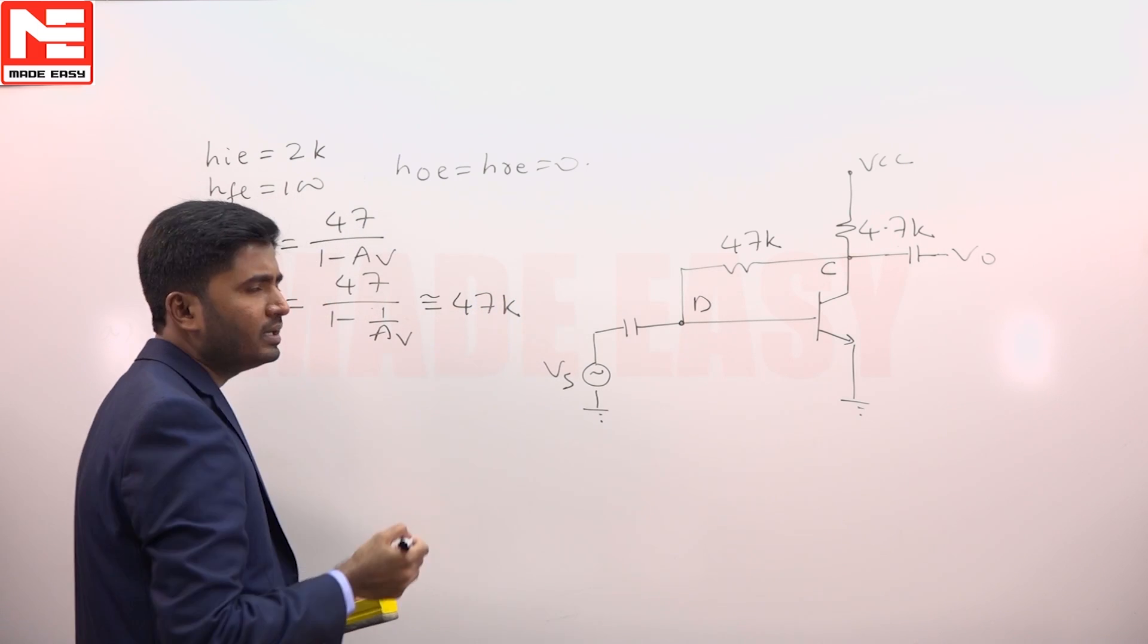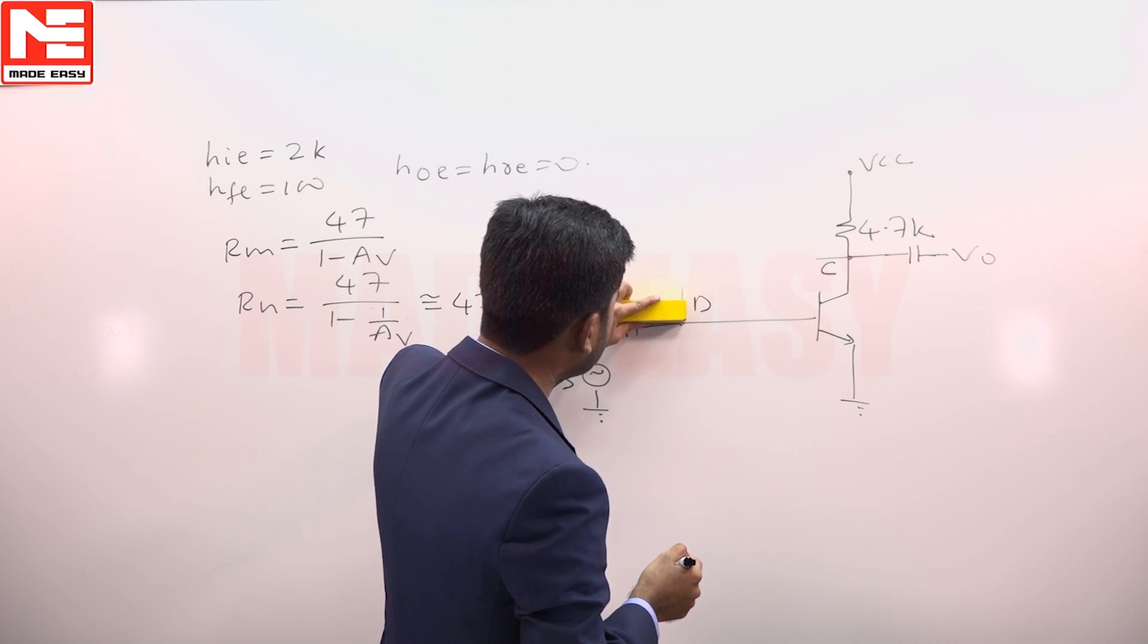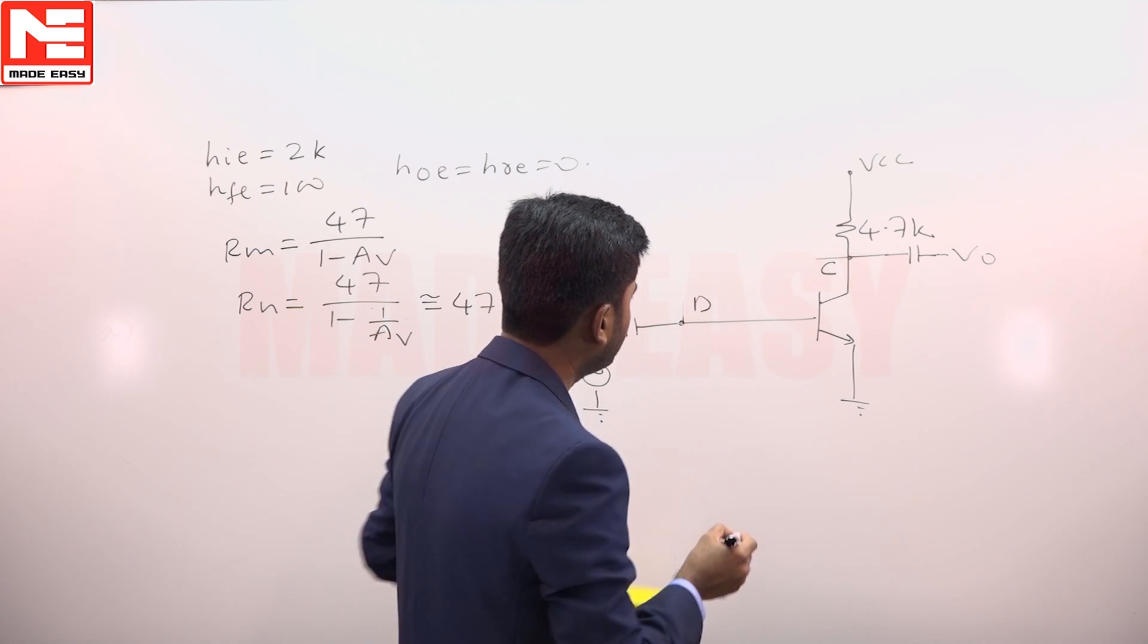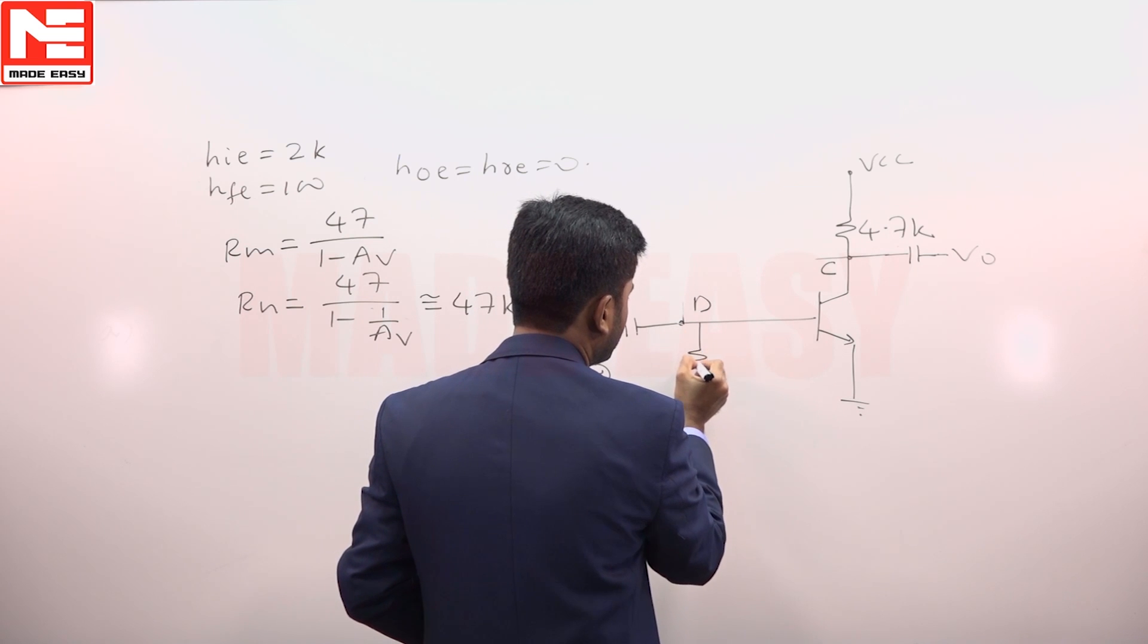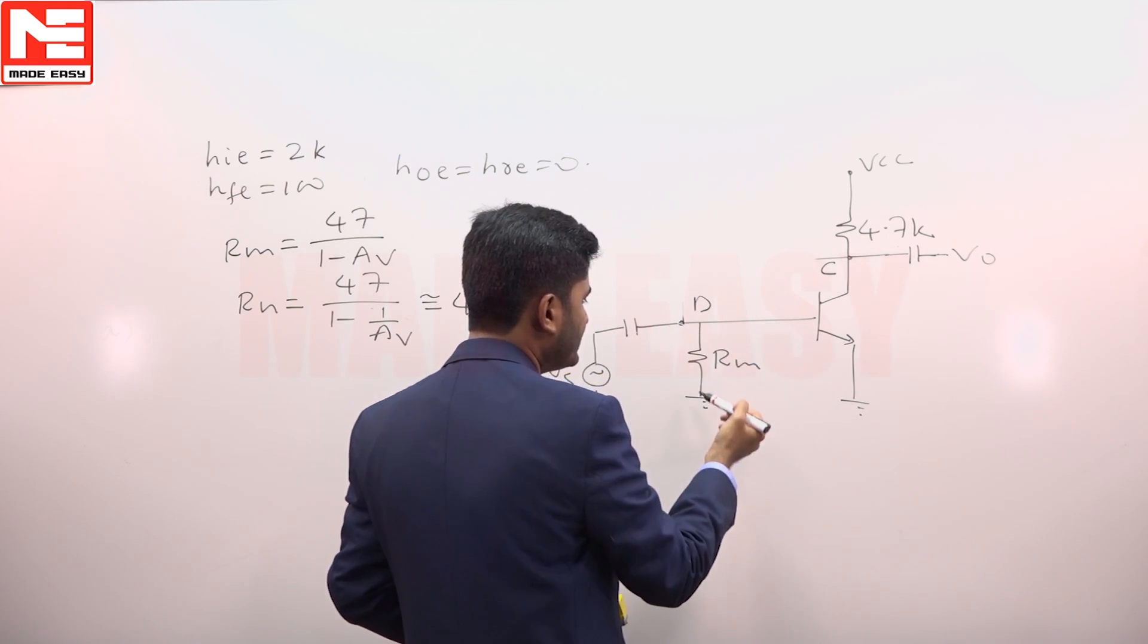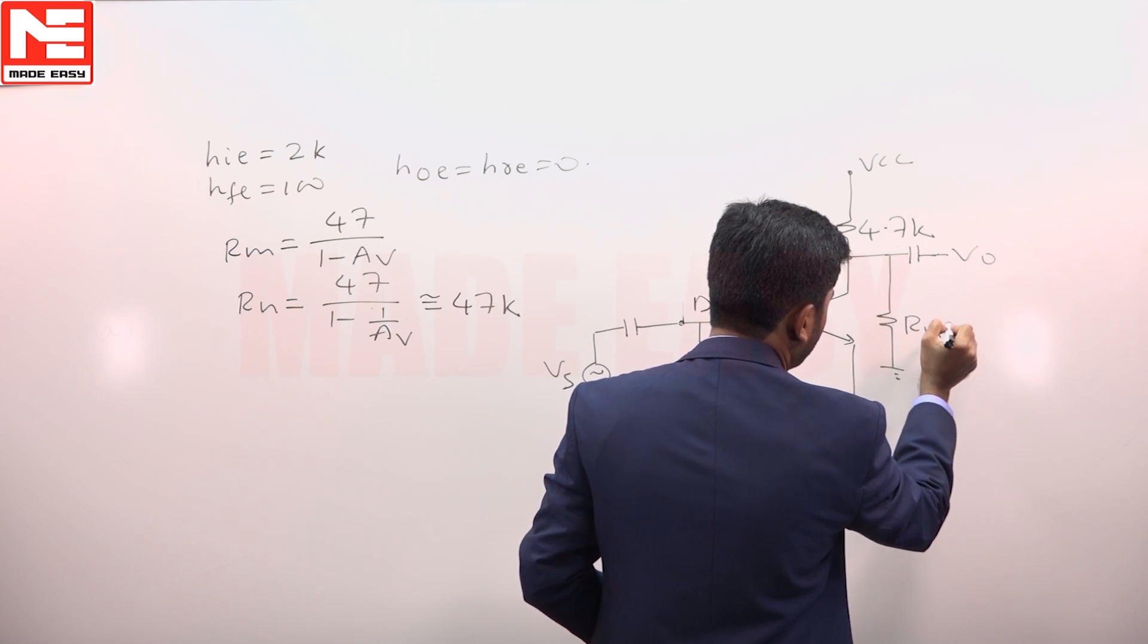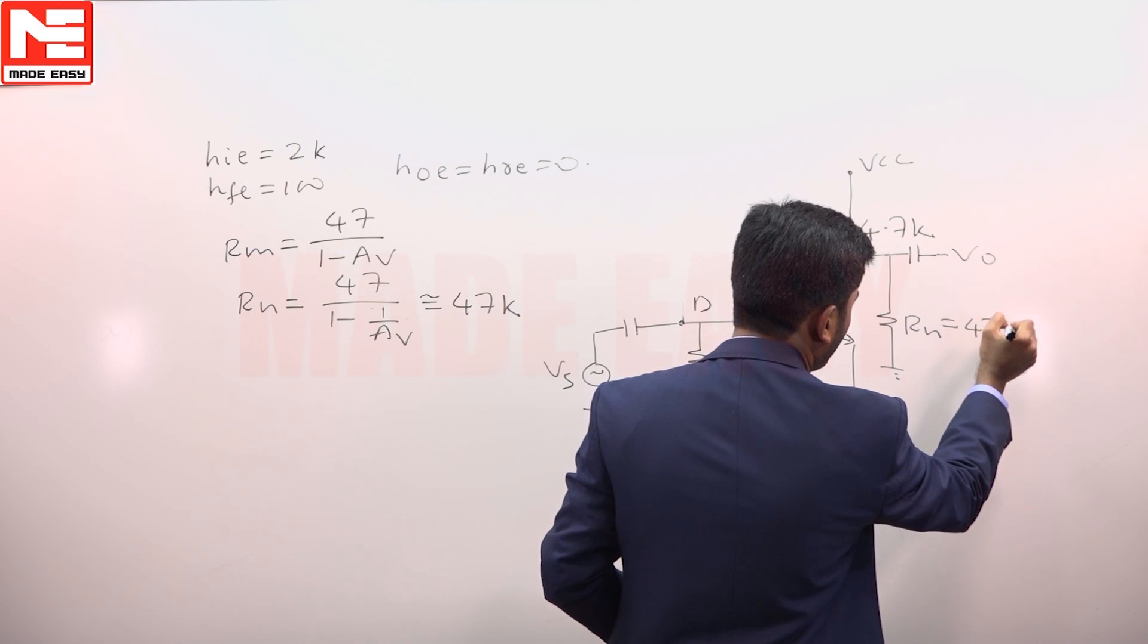So with the help of Miller's theorem, the same circuit can be redrawn wherein 47k resistor will be replaced with R m and R n. Then this circuit I can redraw as R m will be shown between base and ground, and R n will be drawn between collector and ground. That R n is equal to 47 kilo ohm.